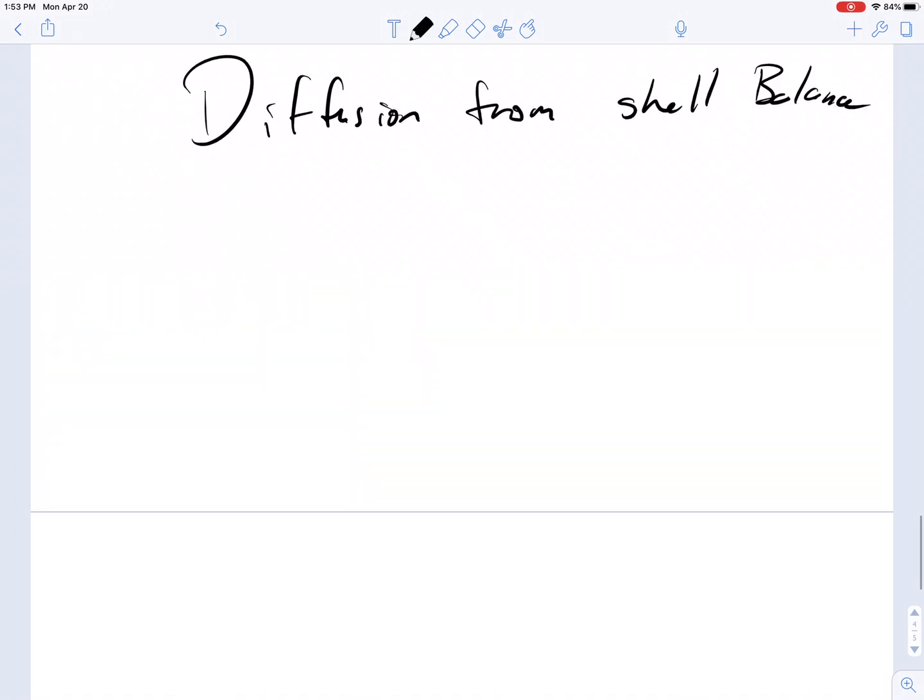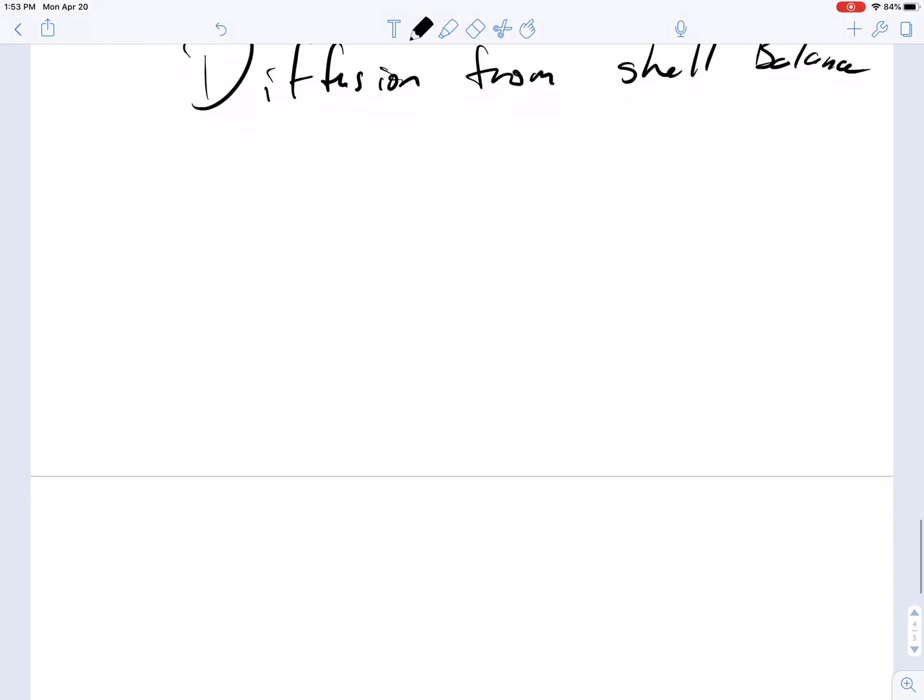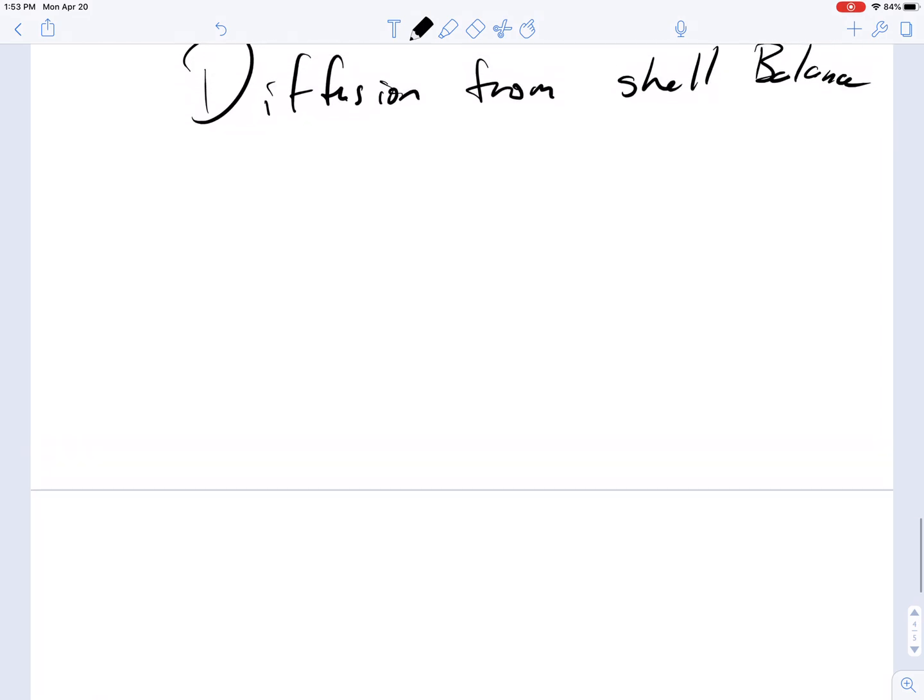Hello. Here's the alternative approach to the approach that was just covered that had the telegraph process. So this is how you get to a diffusion equation from a shell balance.